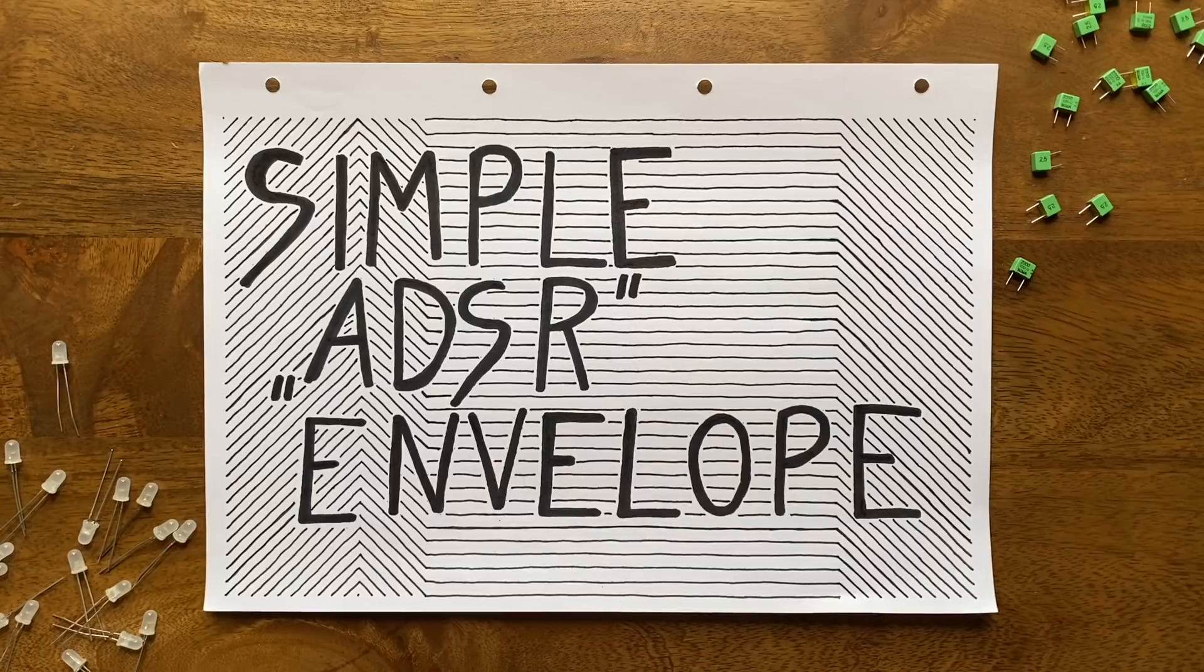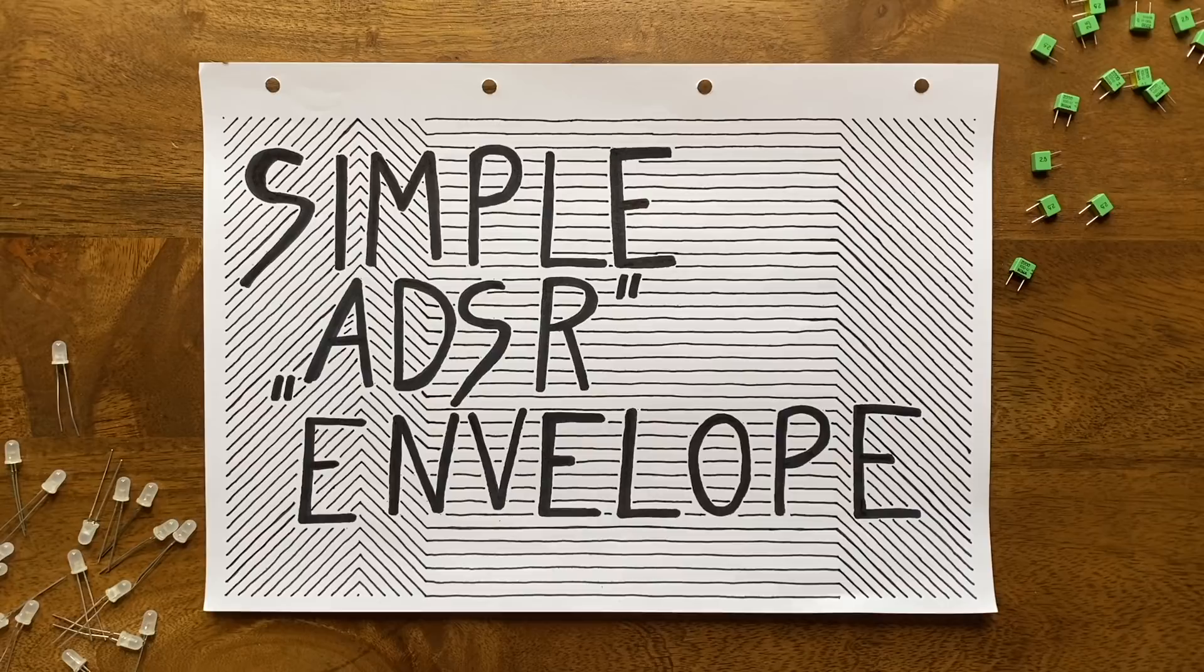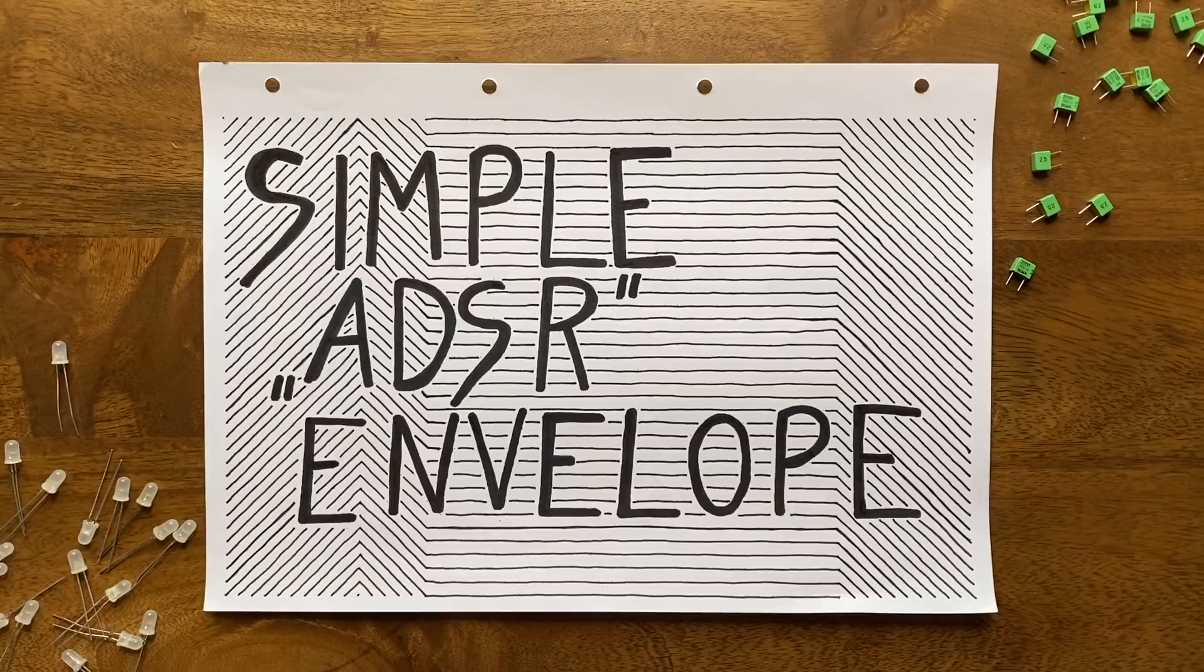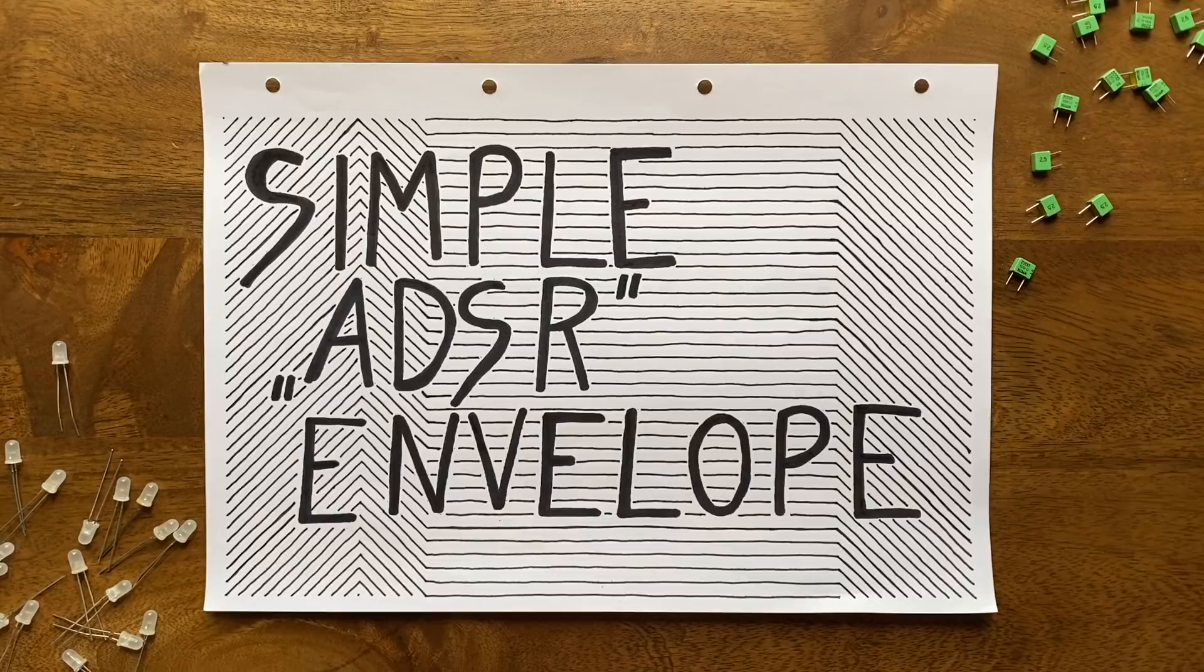If you've been following this channel for a while and built along with my videos, chances are you've now got a VCO, a filter, and maybe a VCA in your DIY modular rack. And while these are essential modules, they're not all that usable without another important addition: an envelope generator. Why's that? What do we need an envelope generator for?